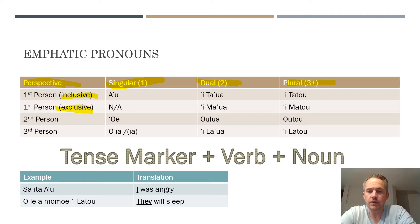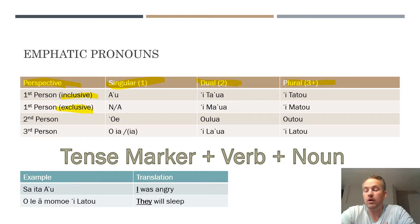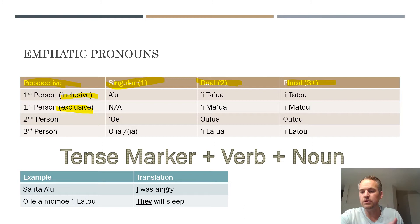Inclusive means the pronoun includes the person you're talking to as well. For example, if you're talking to a friend and say 'why don't we go to the store,' you're including your friend in that 'we.' But if you come home from school and tell your mom 'we did this at school today,' your mom wasn't at school with you — she is excluded from that. That's the concept of inclusive versus exclusive.